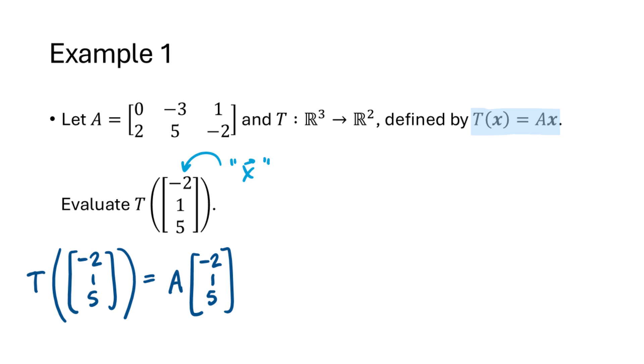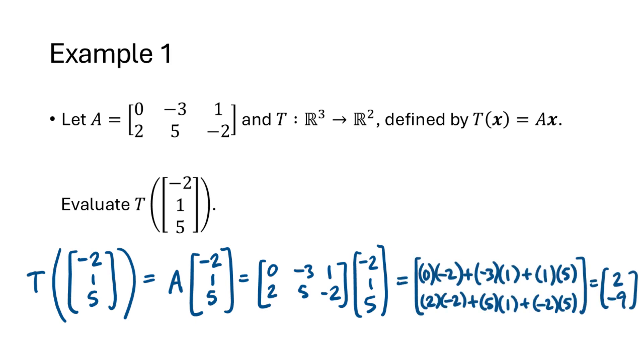Okay, so what do we do? Well that vector that we're plugging in is our vector x, and our function has the formula t of x equals A times x, which means we're being asked for A times this vector. So how do we multiply a matrix by a vector? Well we go across the rows of the matrix and down the entries of our vector, multiplying and adding, and when we do that we get the result 2, negative 9. That result has two entries, and our codomain is R2, so that matches with what we said earlier.